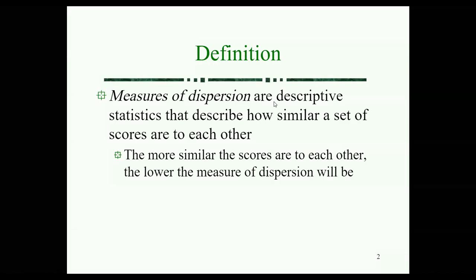The measures of dispersion include the range, variance, kurtosis, and all these points. The measures of dispersion is the descriptive statistic that describes how similar a set of scores are to each other.